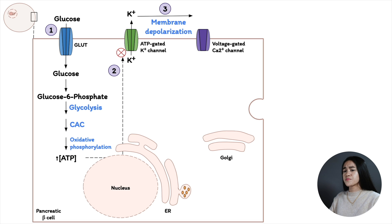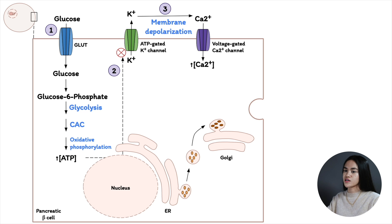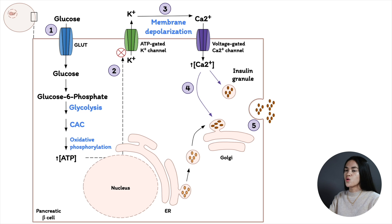When ATP concentration increases, ATP-gated potassium channels in the plasma membrane close, which depolarizes the membrane. This depolarization opens voltage-gated calcium channels, allowing calcium into the cell, which increases the intracellular calcium concentration.